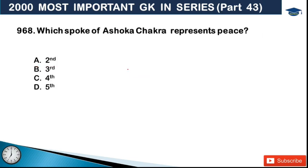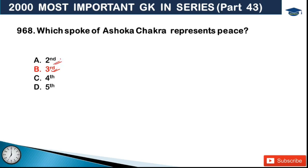Next: which spoke of the Ashok Chakra represents peace? The Ashok Chakra has 24 spokes, and each spoke symbolizes protection of human life. The first spoke represents peace, the second spoke represents health, the third spoke represents sacrifice, and the fourth spoke represents morality.